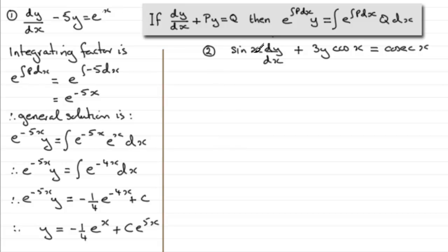In this next example, we've got to solve sin(x) times dy/dx plus 3y·cos(x) equals cosec(x). One of the reasons I picked this example is because it's not in the right format — we need to start with dy/dx. That means we've got to remove the sin(x), and we can do that by dividing each term by sin(x).